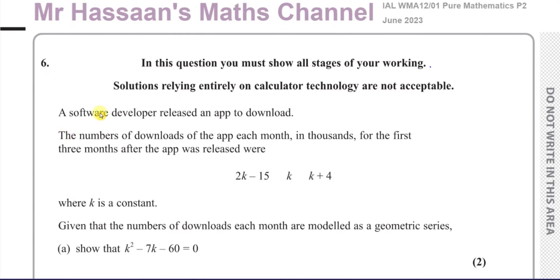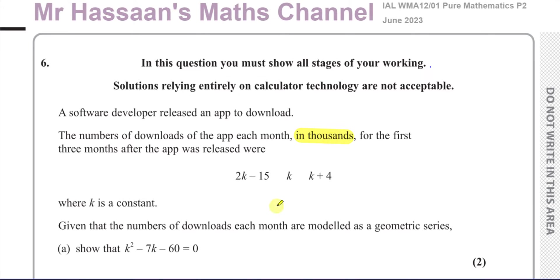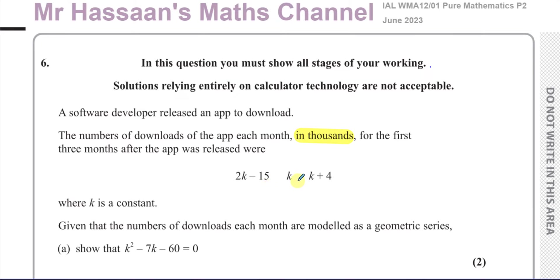We're told about a software developer who releases an app to download. The number of downloads of the app each month, in thousands, for the first three months after the app was released were given by these expressions. So 2k minus 15, k, and k plus 4 are the number of downloads for the first three months — all in thousands.